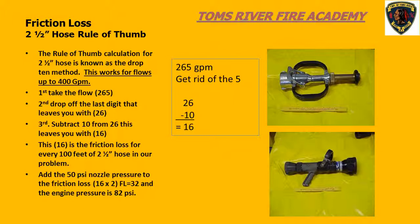As with all rules of thumb, there are limitations. This method is only good up to 400 gallons per minute. Just understand that if we are using 2.5-inch hose as a hand line, our flows are never greater than 325 or 350 gallons per minute.